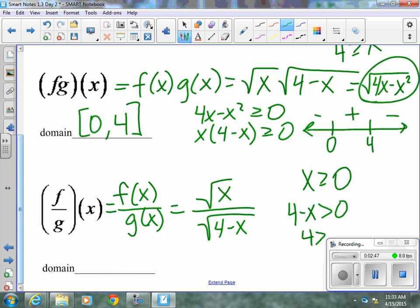So 4 has to be greater than x. And we add x to both sides. So if x is greater than or equal to 0, but x is smaller than 4, we know it goes from 0 to 4. 0 is included because of the equal to, or is not.